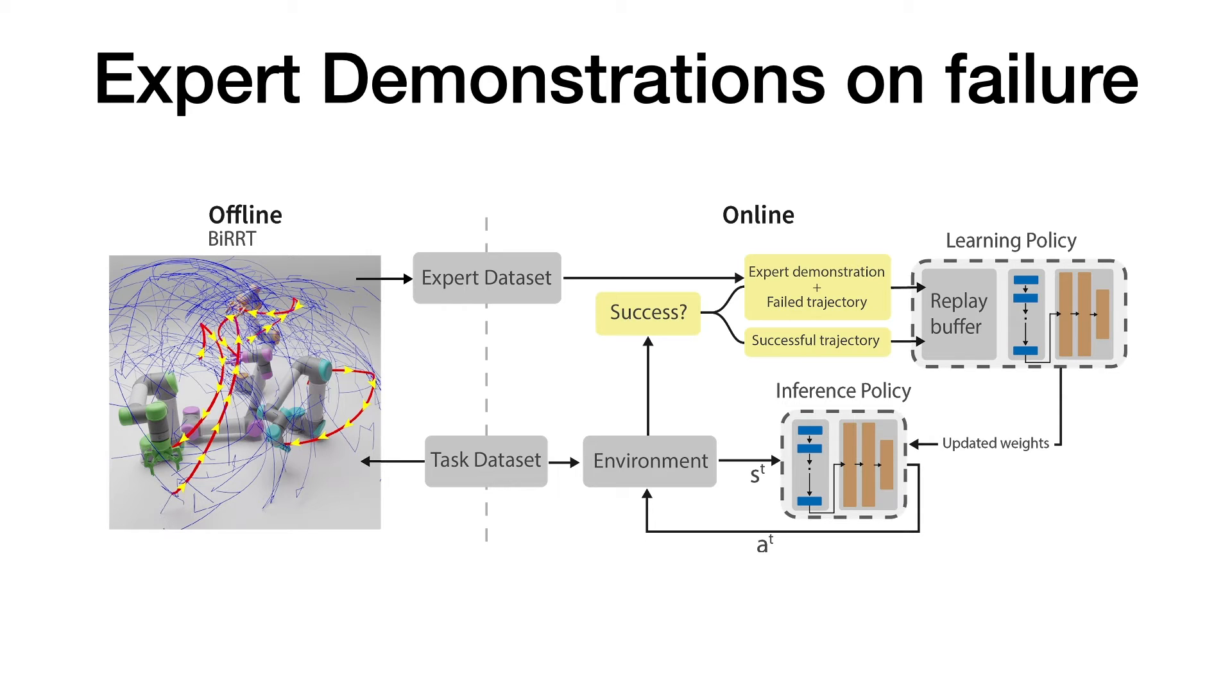Then, during training, if the policy fails on a specific task, the corresponding expert demonstration is supplied along with its failed trajectory. Otherwise, the policy will only see its successful trajectory, which allows the policy to improve through self-exploration beyond the expert.